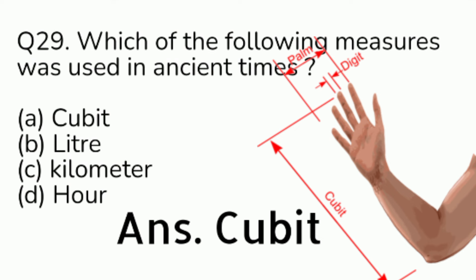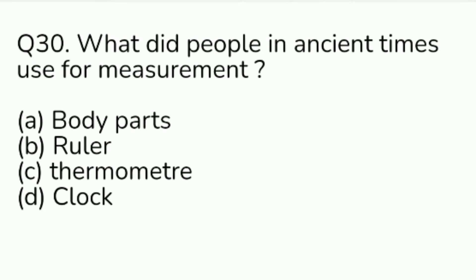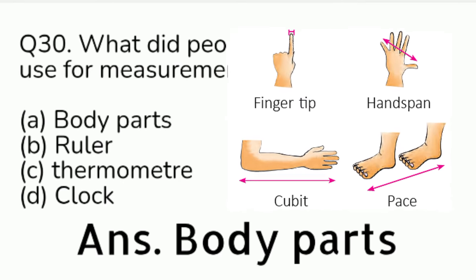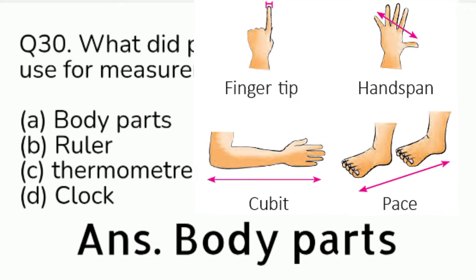Question number 30. What did people in ancient times use for measurement? Option A: body parts. Option B: ruler. Option C: thermometer. Option D: clock. Answer is Option A, body parts.